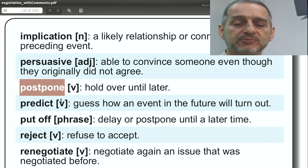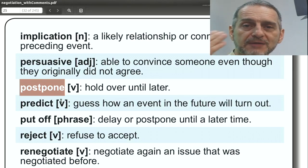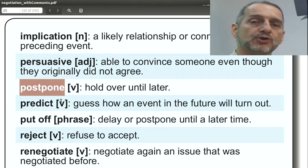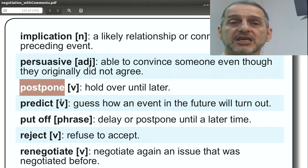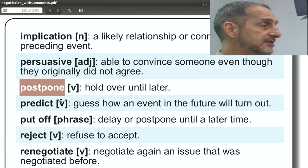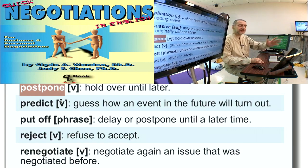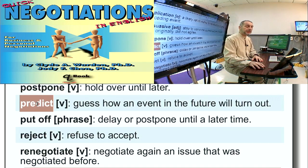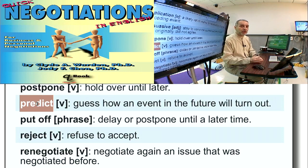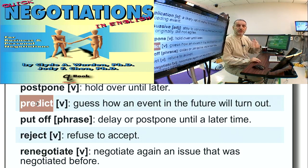'Postpone' is a lot like delay — it means to put something off until a later time. In a negotiation, you can say: 'We need to postpone this decision,' meaning you're going to change the time to make the decision later. You can also say: 'We're going to postpone the shipping,' or 'We're going to postpone the whole negotiation.' Usually you would give a specific date or time: 'We're going to postpone this negotiation until Monday.' It's not necessarily negative.